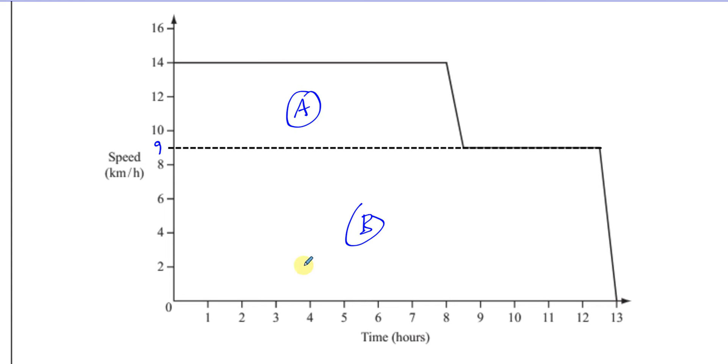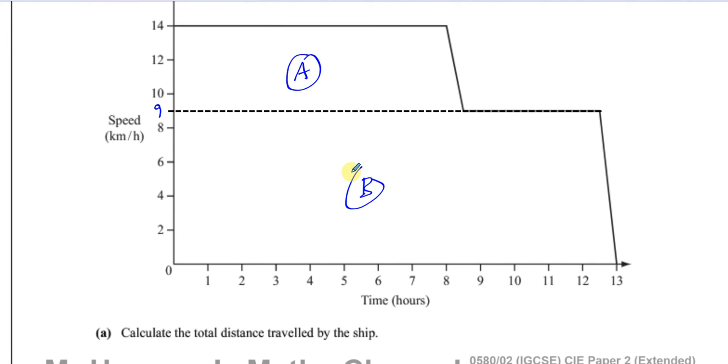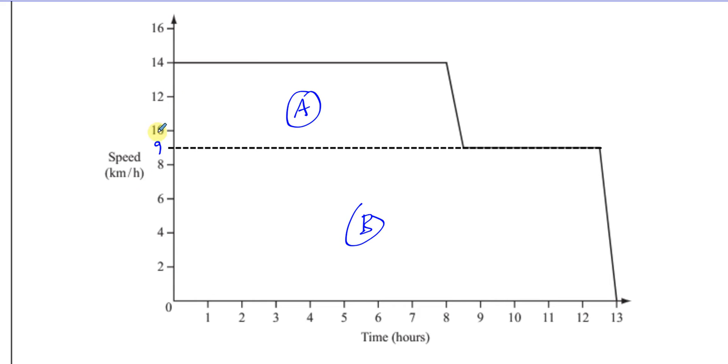So that line here is going to be a better line to draw to split this into only two areas. You have two trapeziums, basically. We have trapezium A and trapezium B. If I find the area of trapezium A and add the area of trapezium B, I've got the area under the whole graph, which tells us the distance traveled.